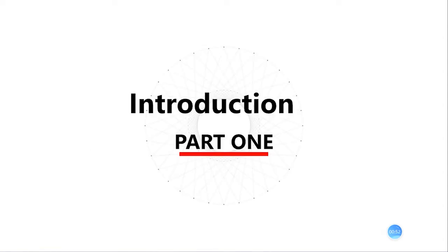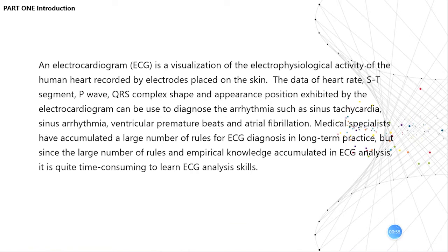I will now talk about the first part: introduction. An ECG is a visualization of the electrophysiological activity of the human heart recorded by electrodes placed on the skin. The data of heart rate, ST segment, P wave, QRS complex, and the period's position exhibited by the electrocardiogram can be used to diagnose arrhythmias such as sinus tachycardia, sinus arrhythmia, ventricular and atrial fibrillation.